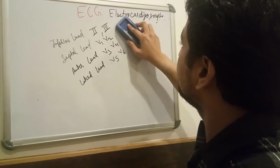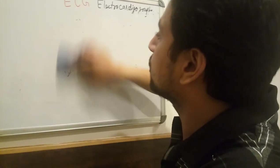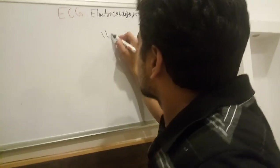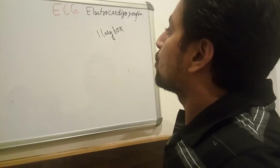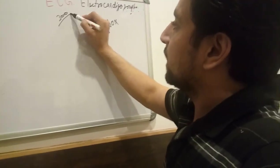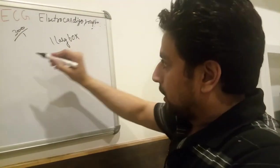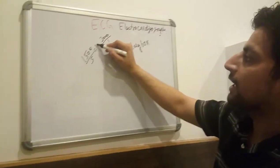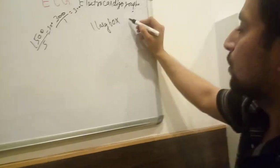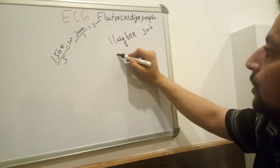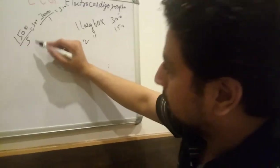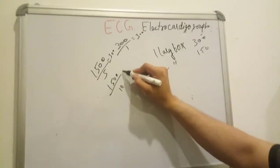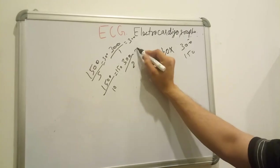Here is a trick to remember heart rate calculation. One large box = 300 bpm; two large boxes = 150 bpm; three large boxes = 100 bpm. For small boxes use 1500. For example, if R-R interval is 1 large box (5 small boxes), 1500 divided by 5 = 300, and 300 divided by 1 = 300. If 2 large boxes (10 small boxes), 1500 divided by 10 = 150.